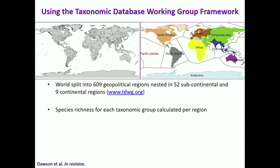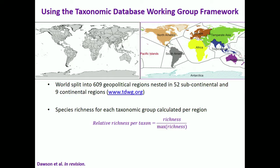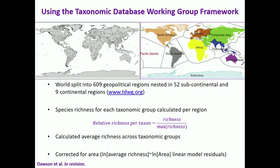Within each of those 609 geopolitical regions, I calculated species richness for each taxonomic group. Because ranges of values differ greatly, I computed relative richness — richness for a region divided by the maximum for that group — putting everything on a scale from 0 to 1. I then calculated a simple average and fitted a linear model correcting for area using residuals.